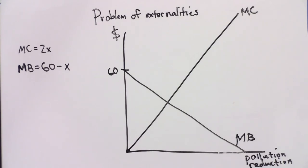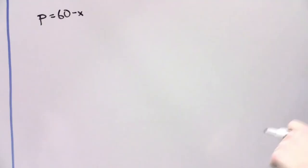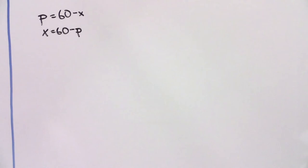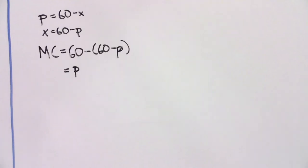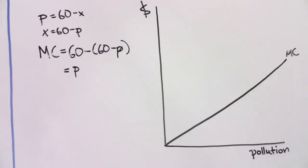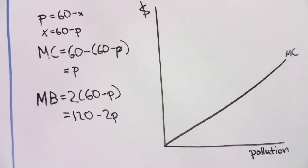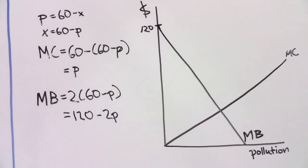However, we could analyze the costs and benefits of pollution rather than pollution reduction. Let's say that the level of pollution is equal to 60 minus any pollution reduction, so P equals 60 minus X. We can rearrange terms to see that X equals 60 minus P. The marginal benefit of pollution reduction is the same as the marginal cost of pollution. By substituting 60 minus P for X, we see that the marginal cost of pollution equals 60 minus (60 minus P), which equals P. Similarly, by substituting 60 minus P for X, we can see that the marginal benefit of pollution equals 2 times (60 minus P), or 120 minus 2P.